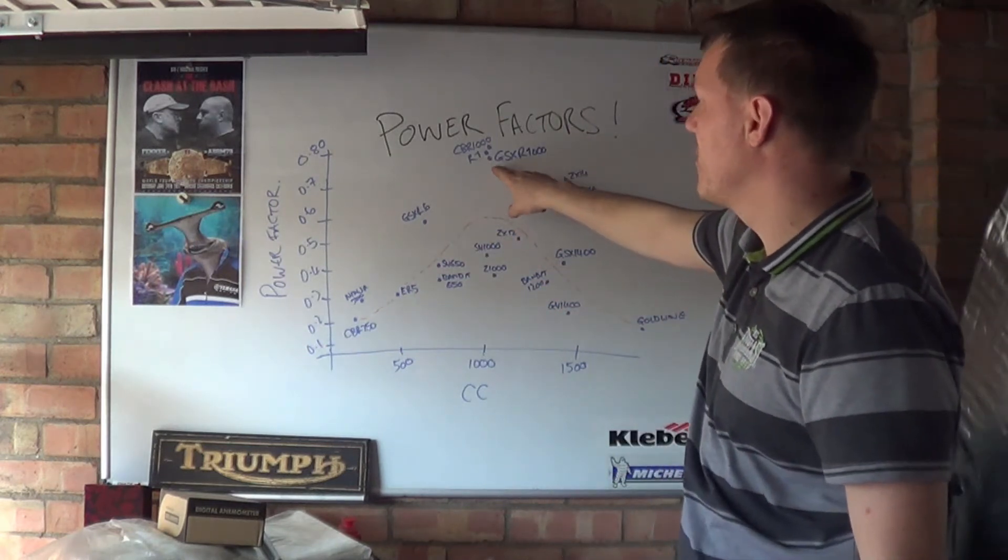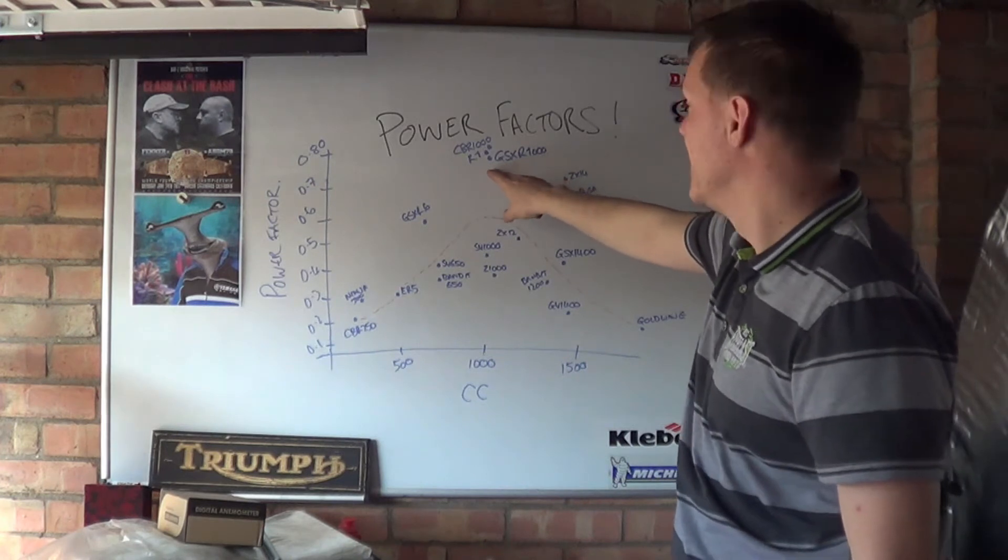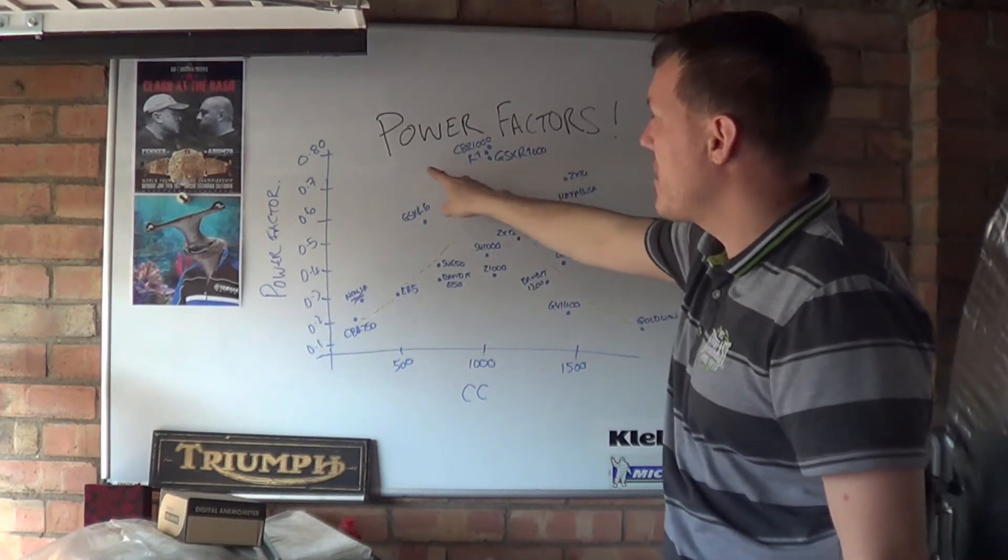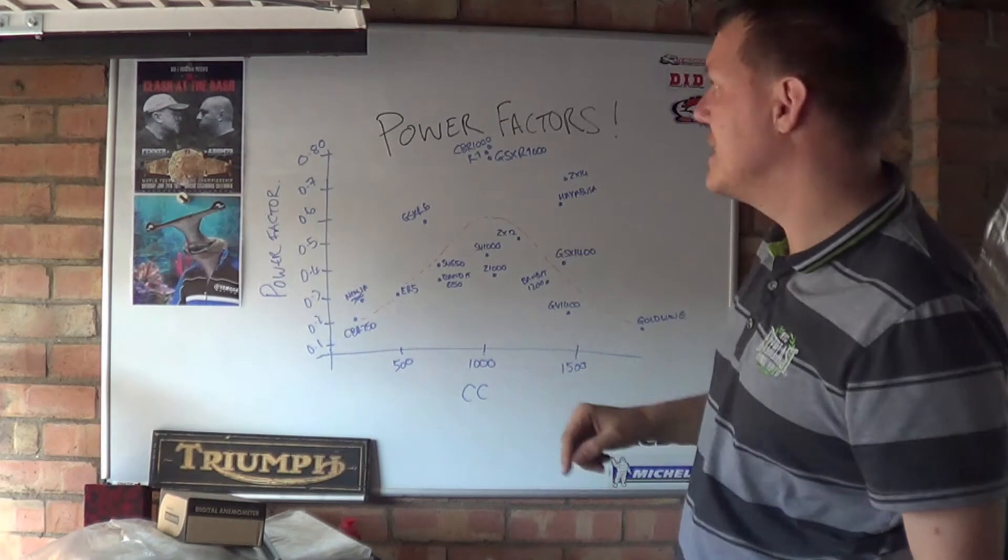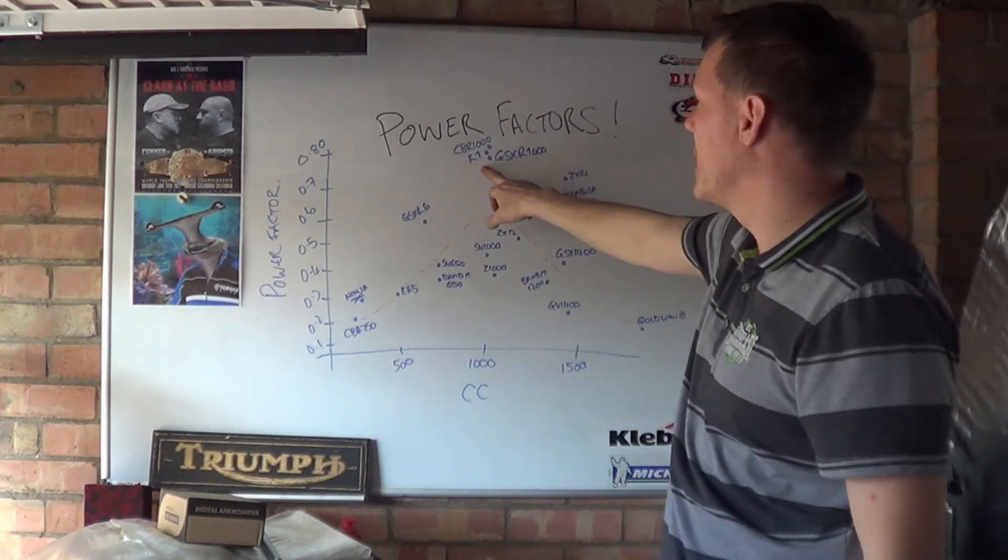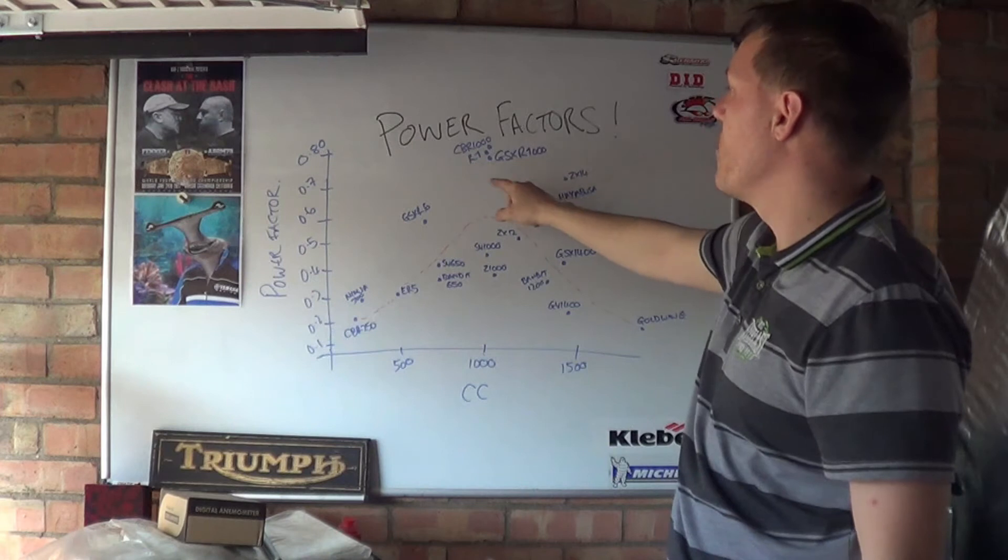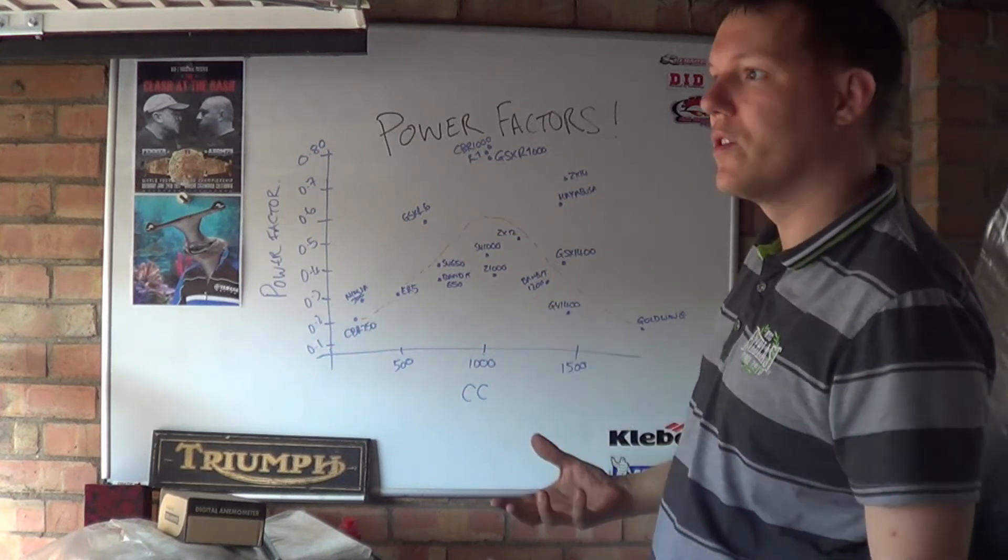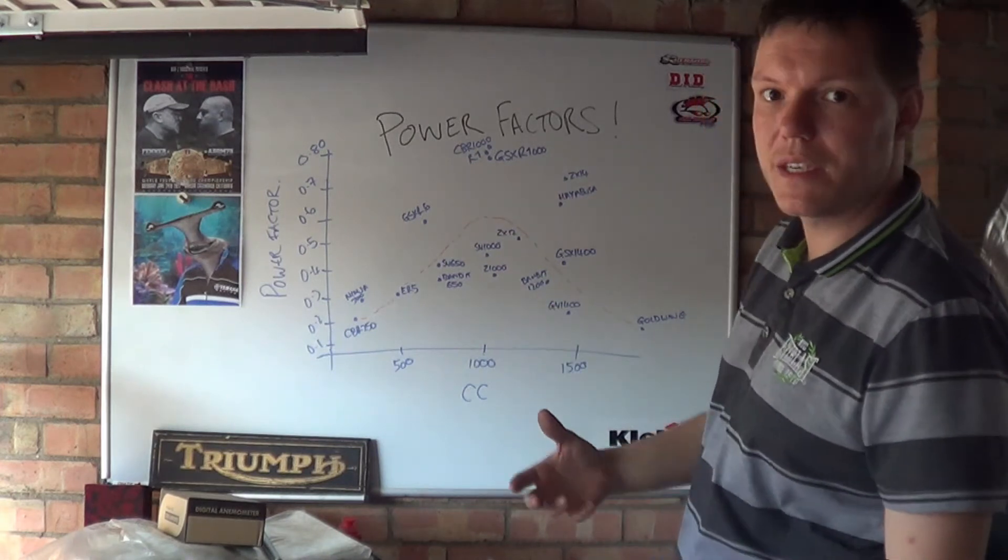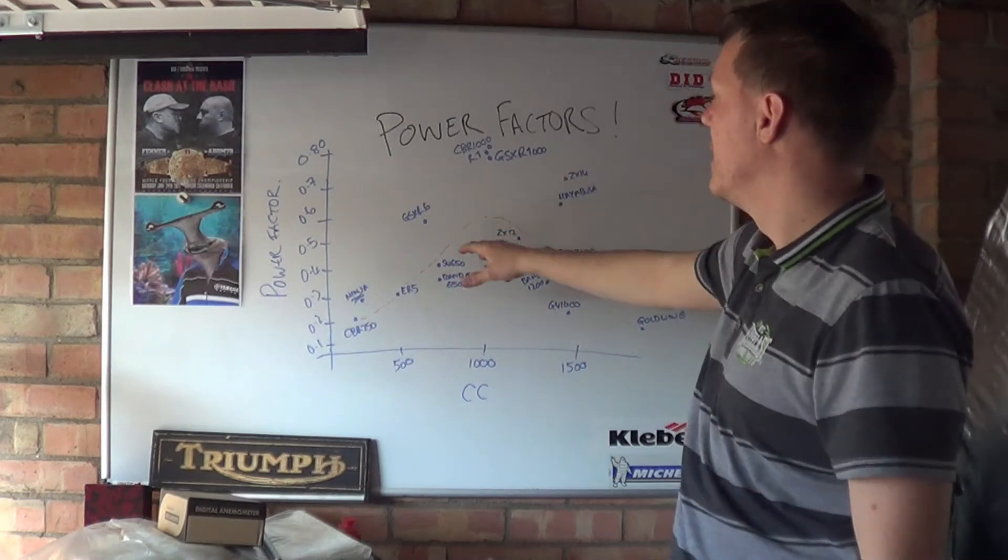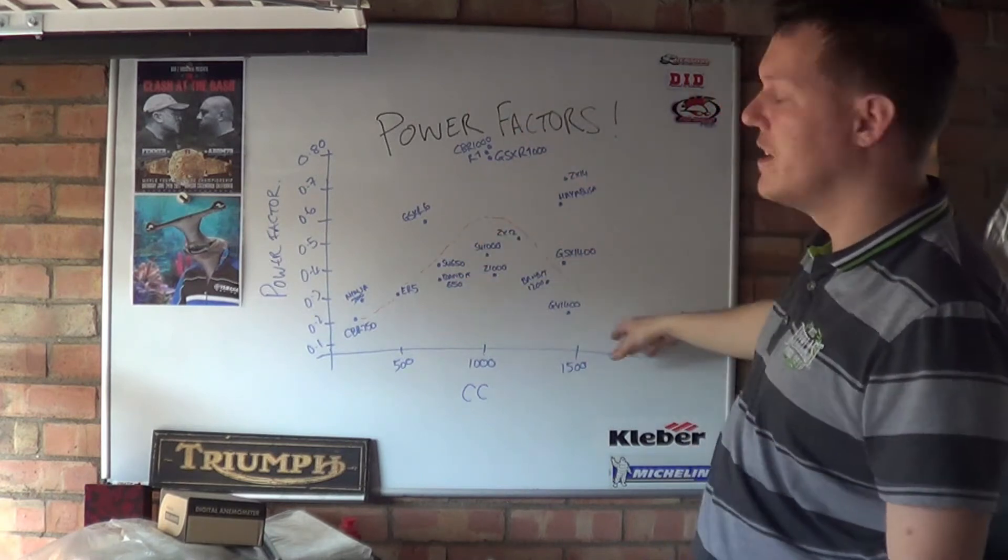And as you can see there's this hump in the middle where the 1000cc guys sit. And they all have a power factor of about 0.8. And you've got CBR 1000, R1, GSXR, kind of all the super bikes. So the super bikes live up here. And obviously them going up here raises this curve.